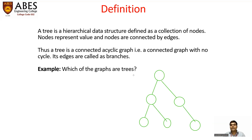A tree is a hierarchical data structure defined as a collection of nodes. Nodes represent values — these nodes have some values and are connected by some edges. A tree is a connected acyclic graph, that is, a connected graph with no cycle.